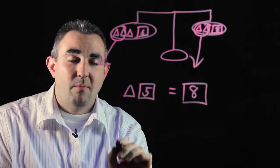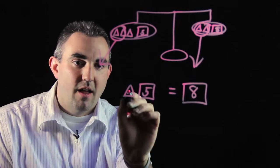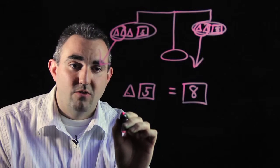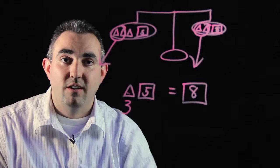So if I have five pounds over here with one triangle, and it has to be the same as eight pounds, the only explanation for this triangle is that it's three pounds, because three plus five gives you eight.